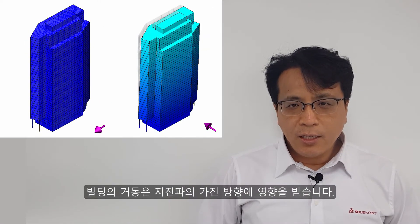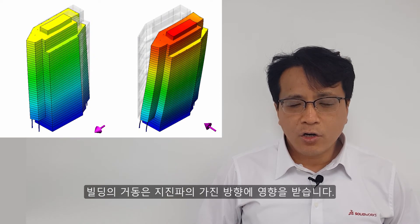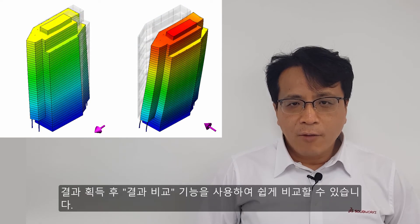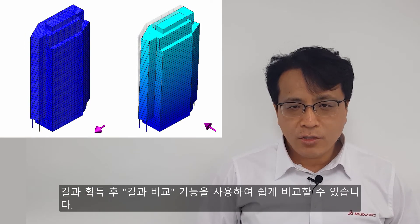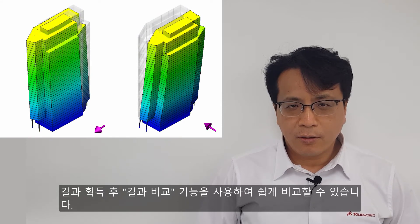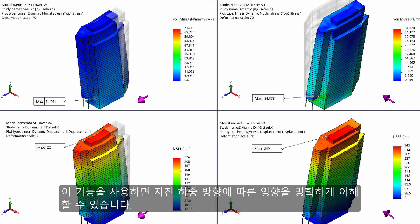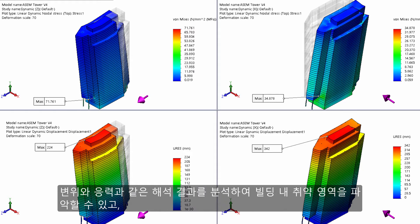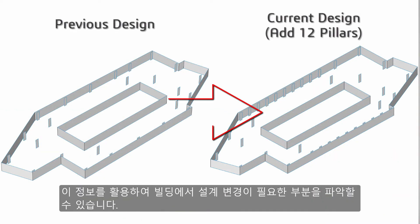The behavior of the building is affected by the direction of the earthquake. We can easily evaluate the effect of each direction of earthquake loading. After getting the results, we can compare them using the compare results function. We can clearly understand the impact of the earthquake loading direction. We can see that the building has bigger displacement when the earthquake loading is applied in the X direction. By analyzing results such as displacement and stress, we can find the weak areas in the building and figure out where design changes are needed.